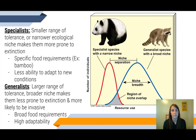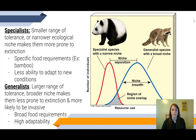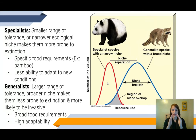Pandas are specialist species because they have a very specific food requirement — they only eat bamboo. This means that if we have a changing environment where something comes in and wipes out bamboo in an area, pandas are going to go extinct very fast because that is the only food that they eat. They're not able to adapt to those changing conditions. We can see on this graph that they have a very narrow niche because they need very specific conditions in order to thrive.